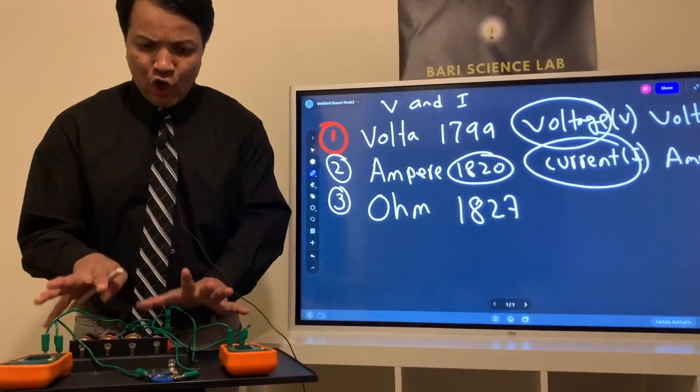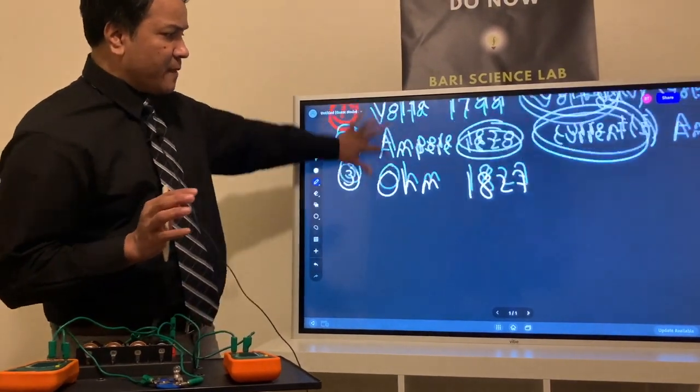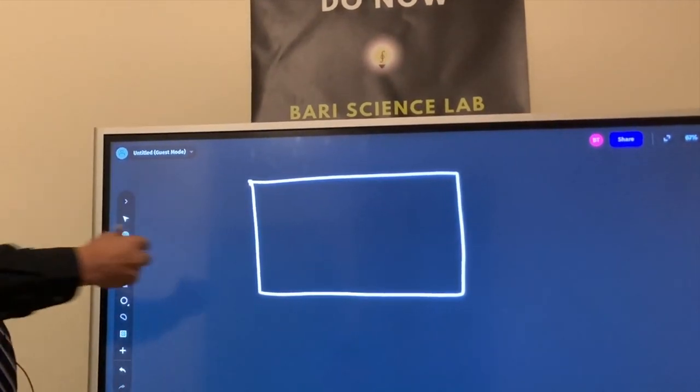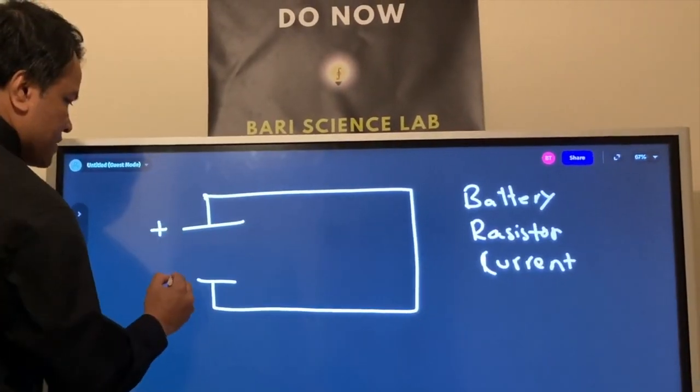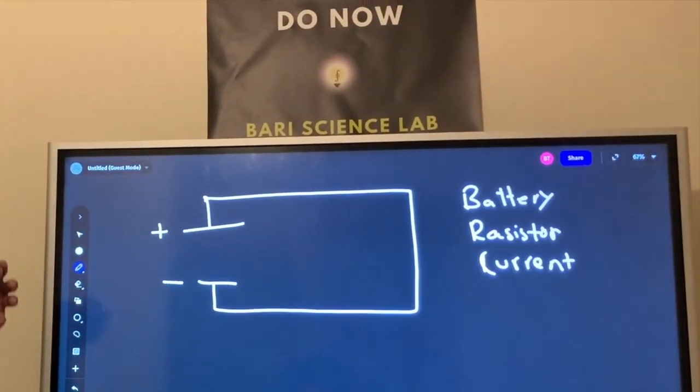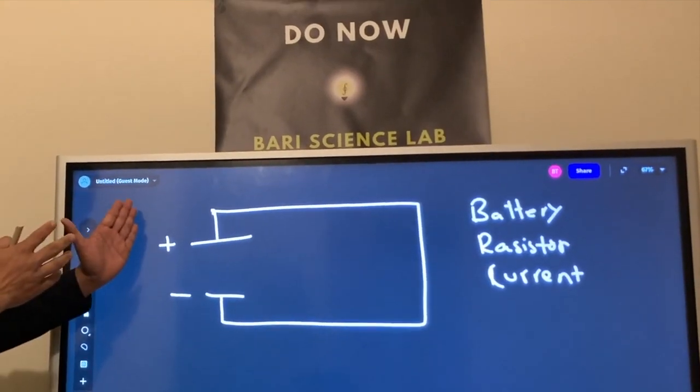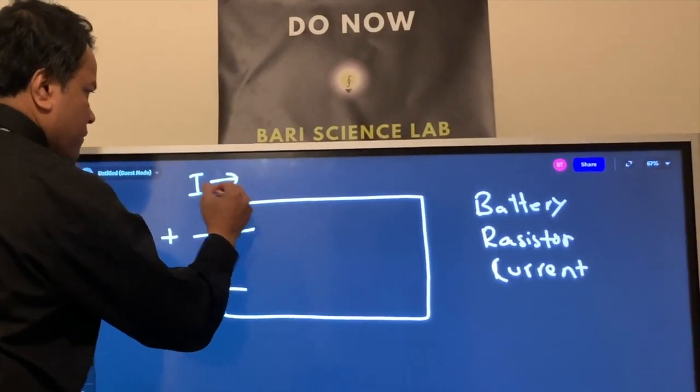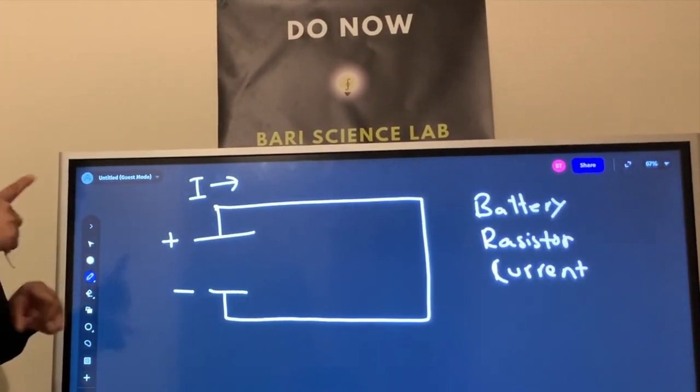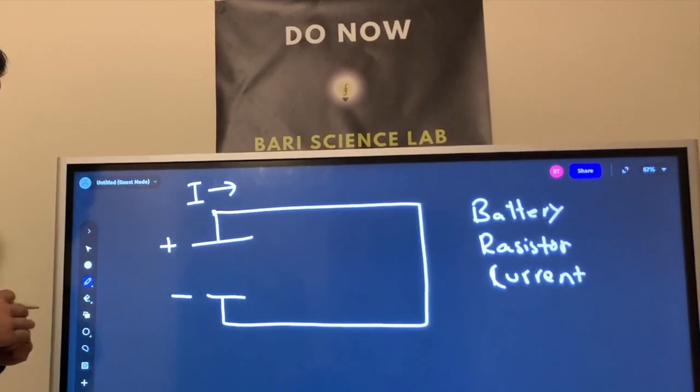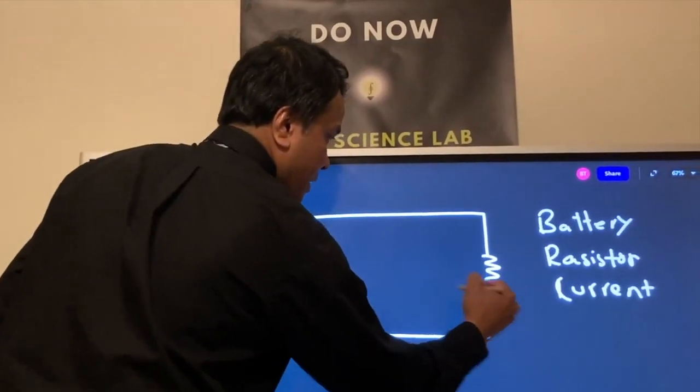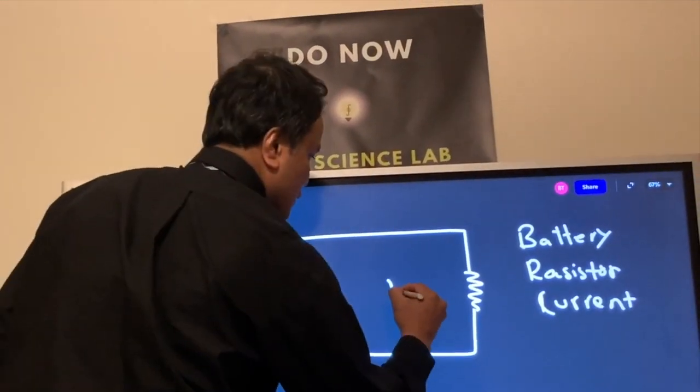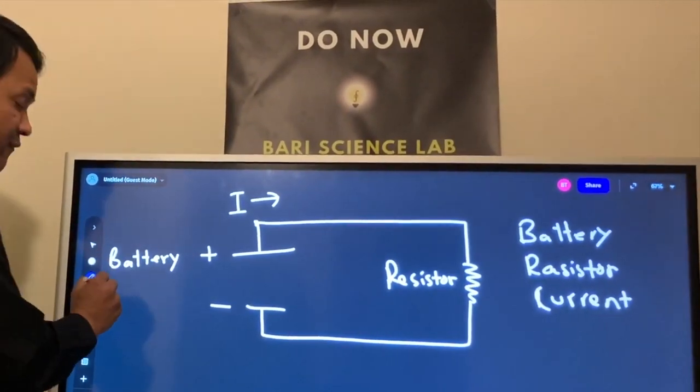Now let's draw these over here. This is a closed circuit. We have to put the battery. Battery is positive, this is negative. So the current flows from positive terminal to the negative terminal, clockwise direction. Draw the light bulb in a traditional way, zigzag line, and we call it a resistor.